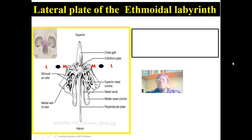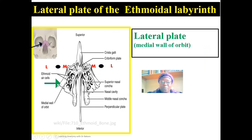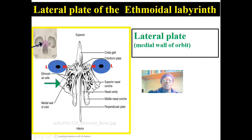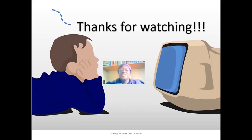The lateral plate forms the medial wall of the orbit. We already described the medial plate, and the lateral plate is said to form the medial wall of the orbit. The orbit is on the lateral side, and the medial wall of the orbit aligns with the lateral plate of the ethmoidal labyrinth. Thanks for watching this video — let's meet again.